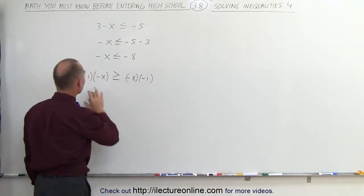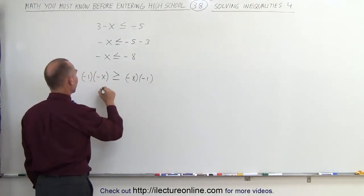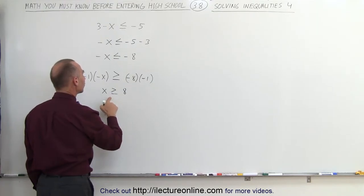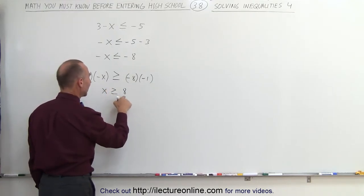So now we continue. We say negative 1 times negative x is x, greater than or equal to negative 8 times negative 1, which is positive 8. And this is the answer. x must therefore be greater than or equal to 8.